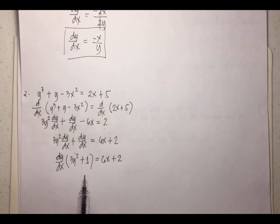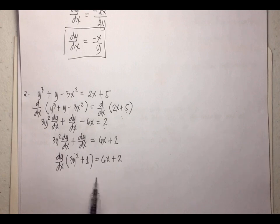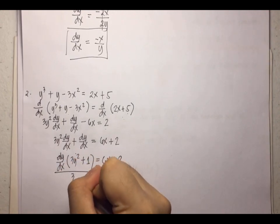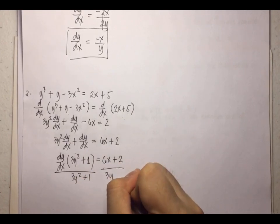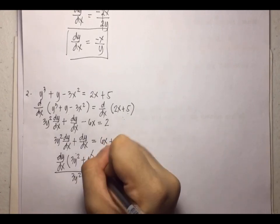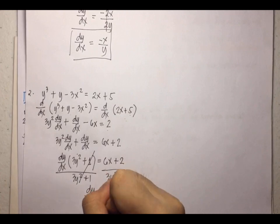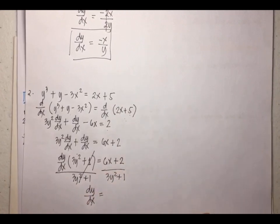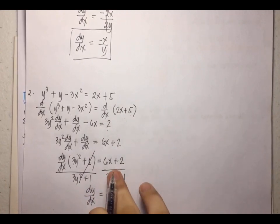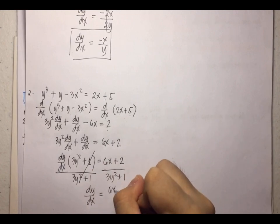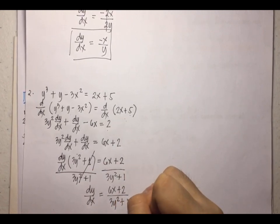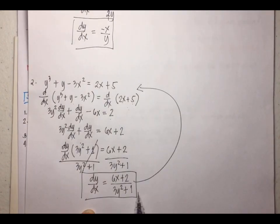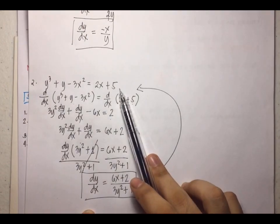We need dy/dx isolated on one side, so we divide both sides by (3y² + 1), canceling that factor on the left. We are left with dy/dx = (6x + 2) / (3y² + 1). And this is the derivative for example number two.